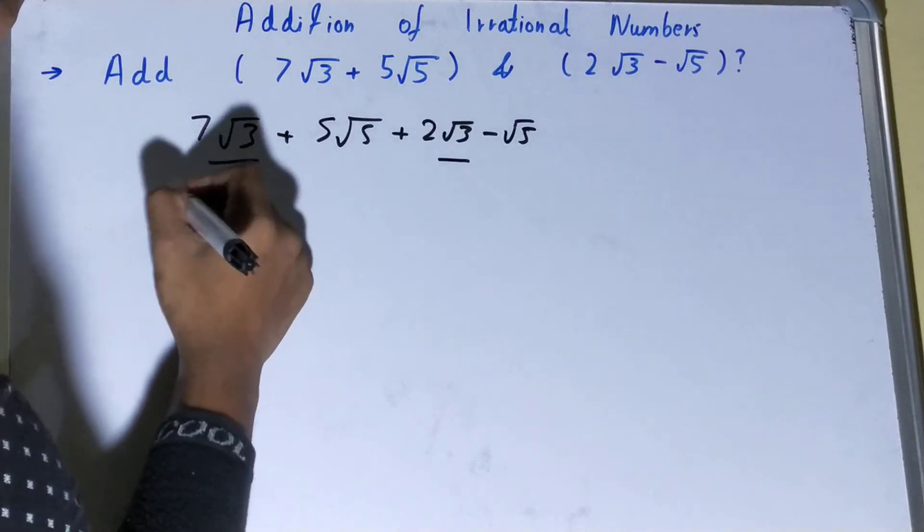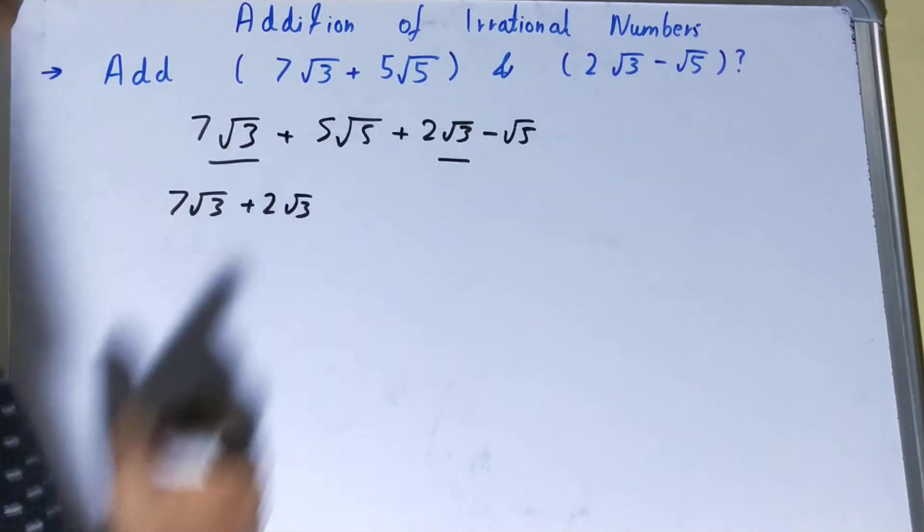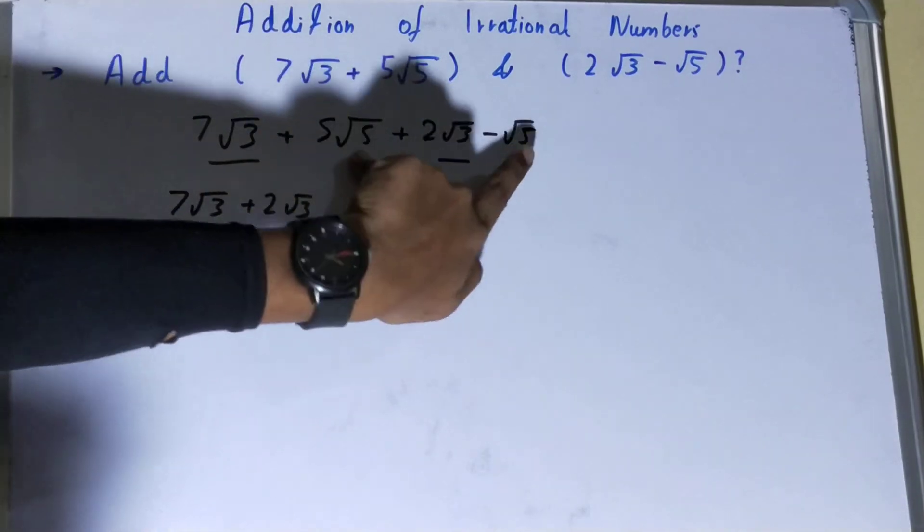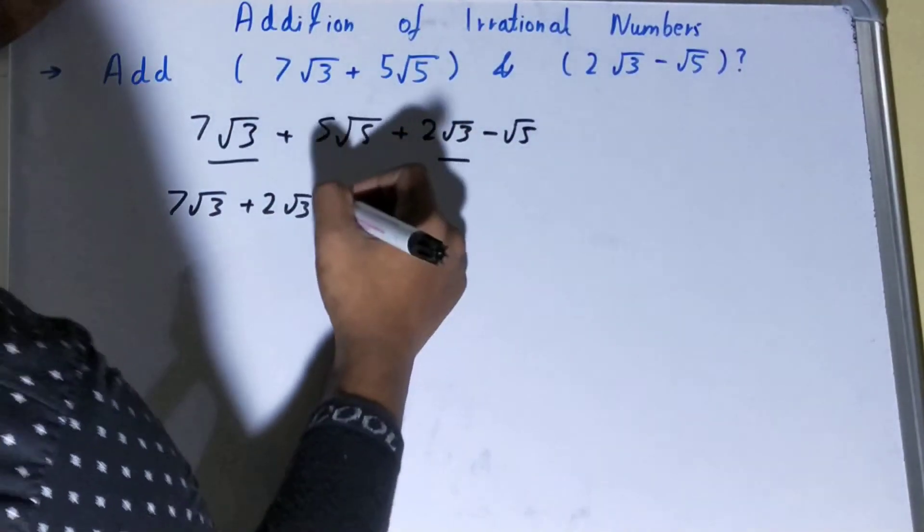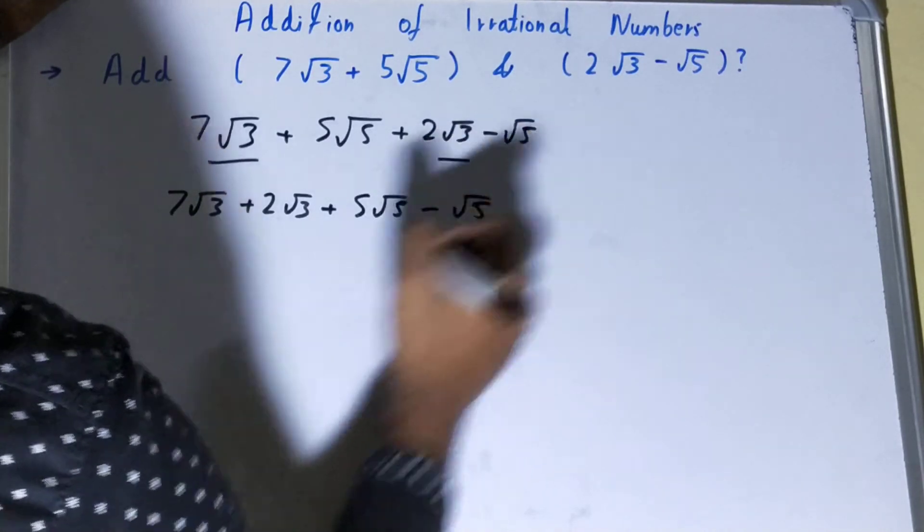having √3, that is 7√3 + 2√3, okay? And the other group you can have is of √5, that is +5√5 - √5, right?